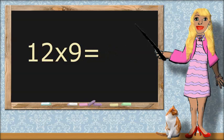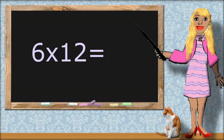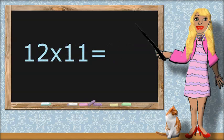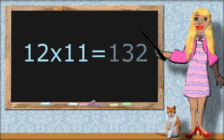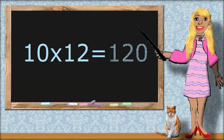Twelve times nine equals one hundred and eight. Six times twelve equals seventy-two. Twelve times eleven equals one hundred and thirty-two. Ten times twelve equals one hundred and twenty.